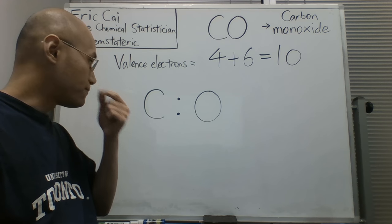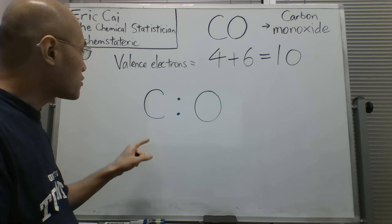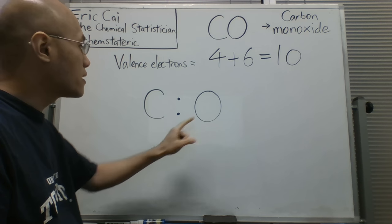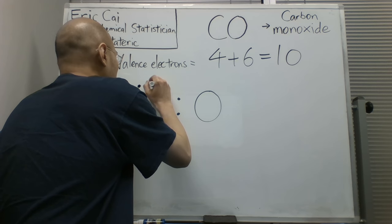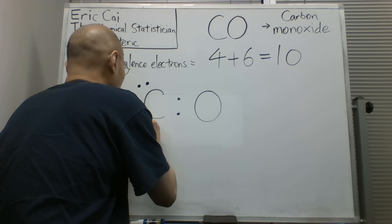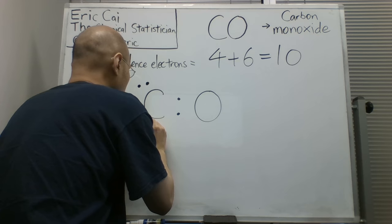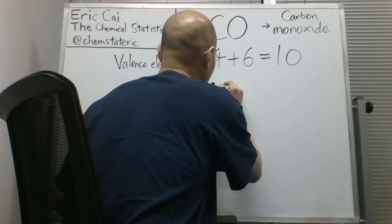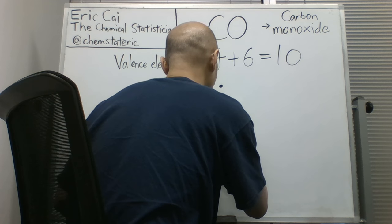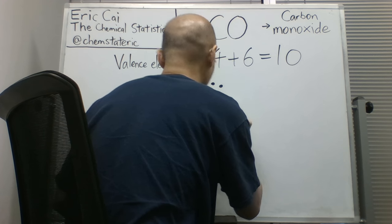So let's assume that carbon gets four and oxygen gets four. So there are two pairs of unbonded electrons for carbon, and two pairs of unbonded electrons for oxygen.